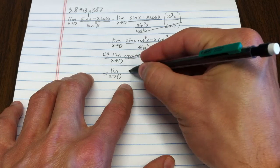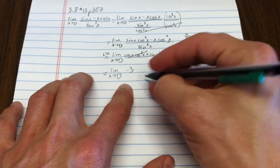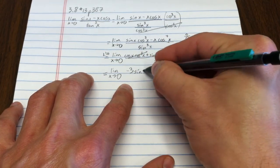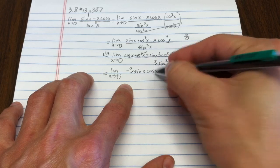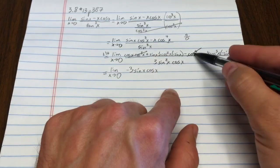This term, once divided, becomes negative 3 sine x cosine x. I take out one sine, one cosine.